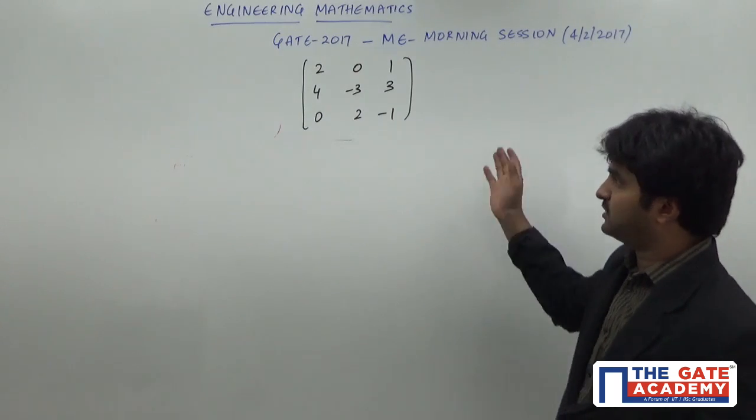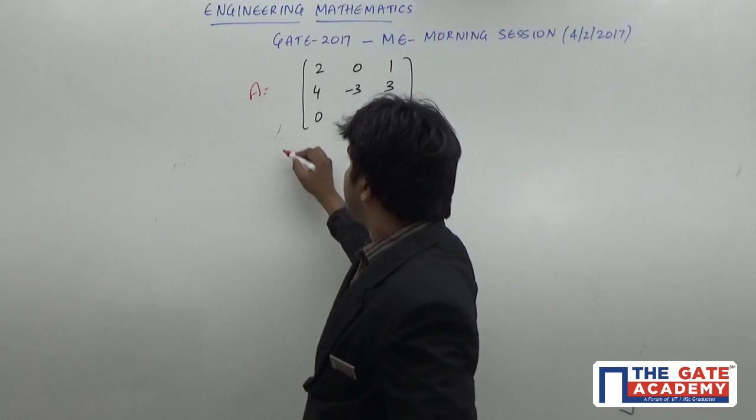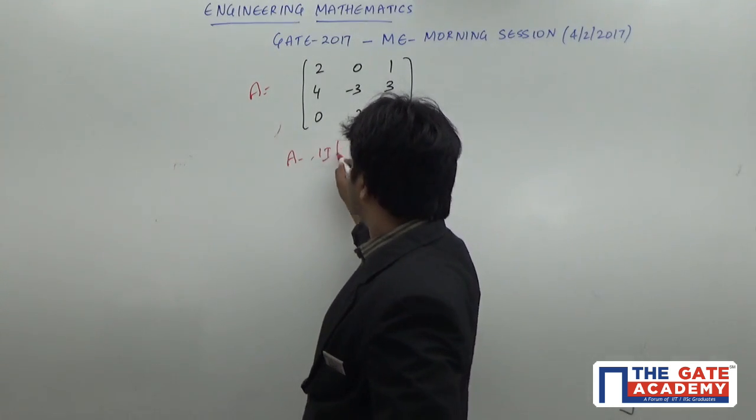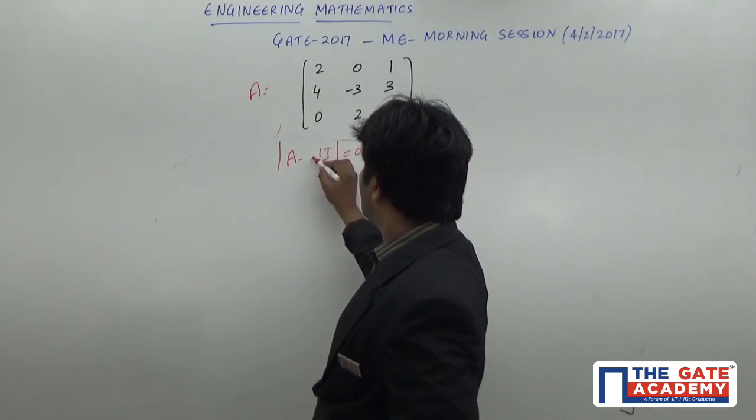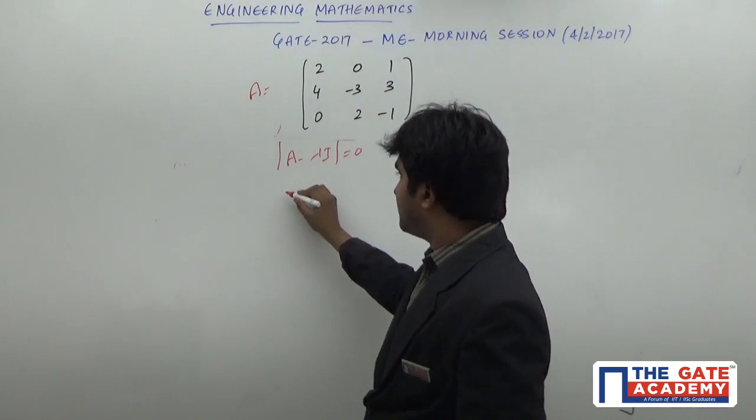If you want to go by the general method, given a particular matrix A, you find A minus lambda I, set the determinant equal to 0, and then for a 3 by 3 matrix you will have a cubic polynomial.